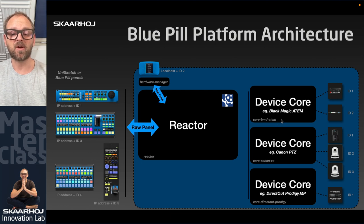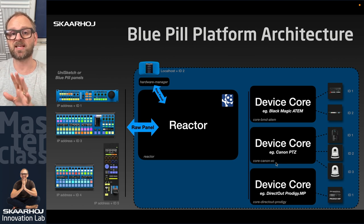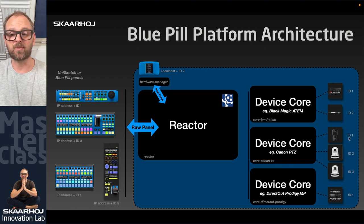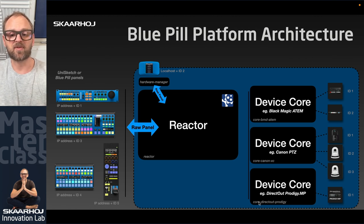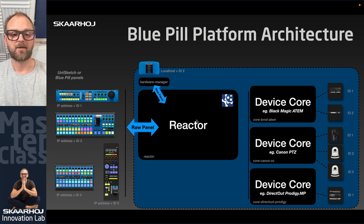On the other side are device cores — binary applications that handle communication with different types of devices. For example, Core BMD ATEM is the Blackmagic ATEM switcher device core, which can talk to one or more ATEM switchers, each with an ID. Core Canon XC handles Canon cameras with the XC protocol — one binary connecting to as many Canon cameras as configured. There's also a Direct Out Prodigy MP device core. IDs don't collide because they are scoped within each device core.